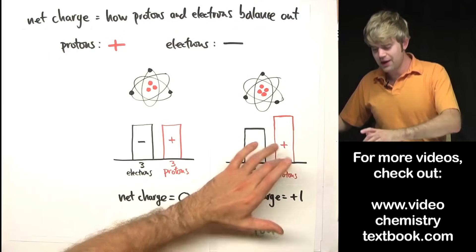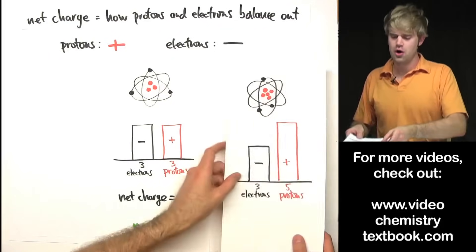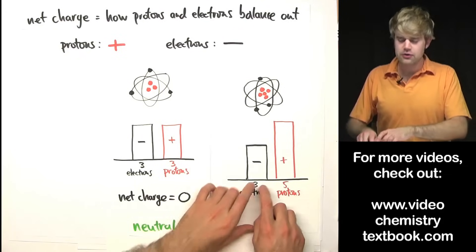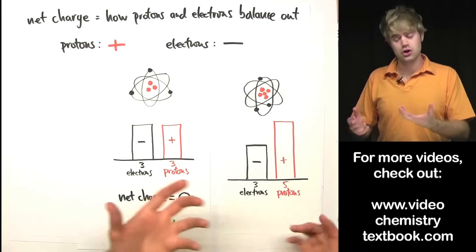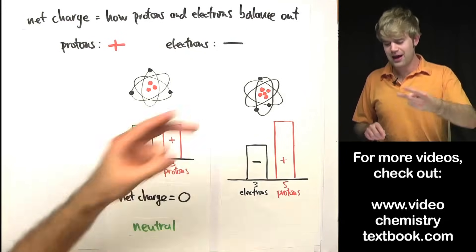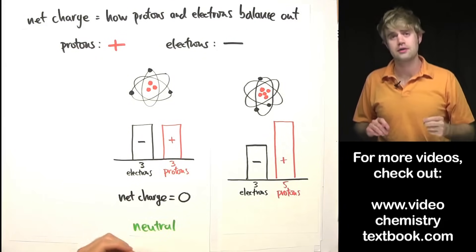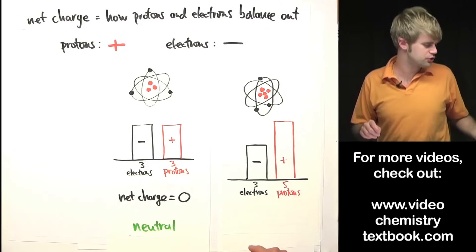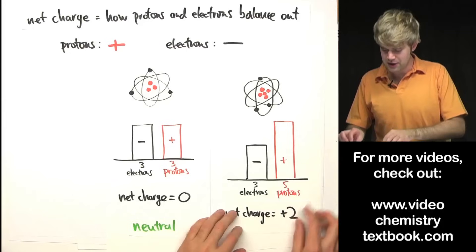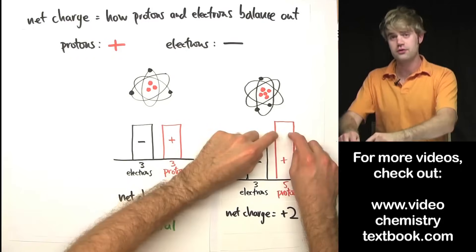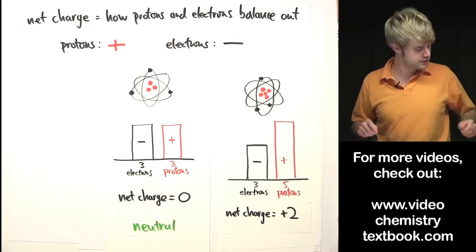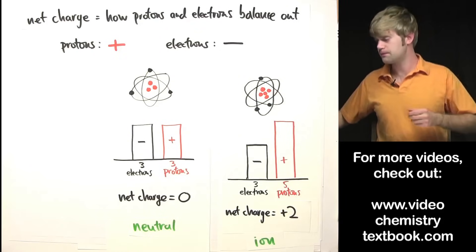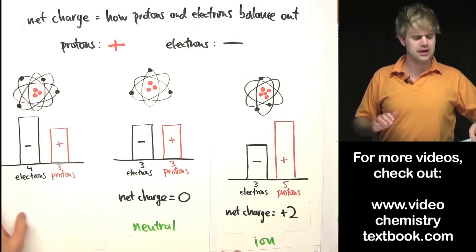What if we have five protons and three electrons? In this case the charges don't balance out either, but now I have two more protons than electrons. Those two extra protons aren't getting balanced out by the electrons, so I'm going to have a net charge of two plus — and again this is going to be an ion because it's got a charge.